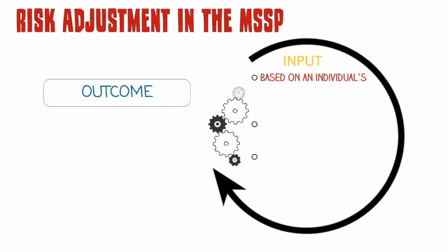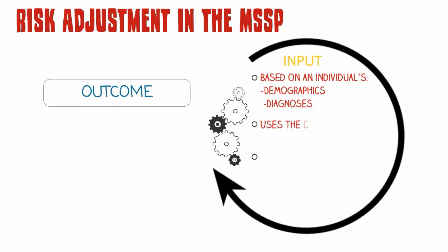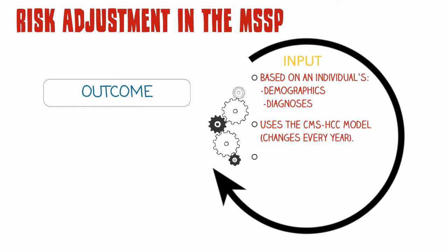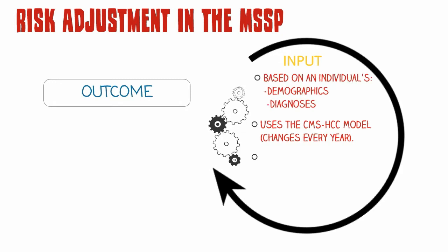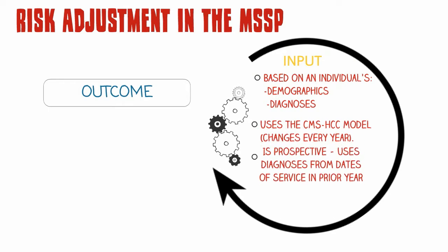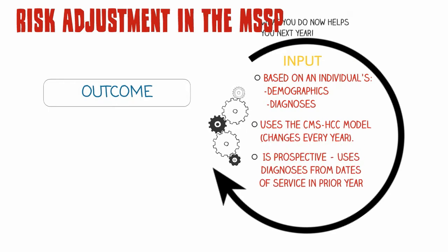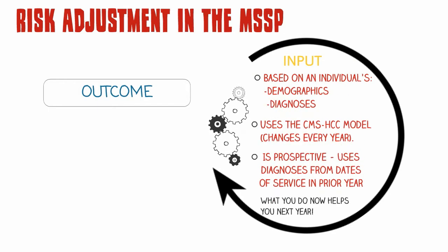As we said before, an individual's HCCs are based on their demographics and their diagnoses. Those diagnoses are grouped together into HCCs, which change from year to year. They may add a diagnosis to an HCC or they may remove a diagnosis from an HCC. What's interesting to note is that a patient's risk score is based upon the diagnoses of the previous year, so what you diagnose this year will impact their risk score next year.